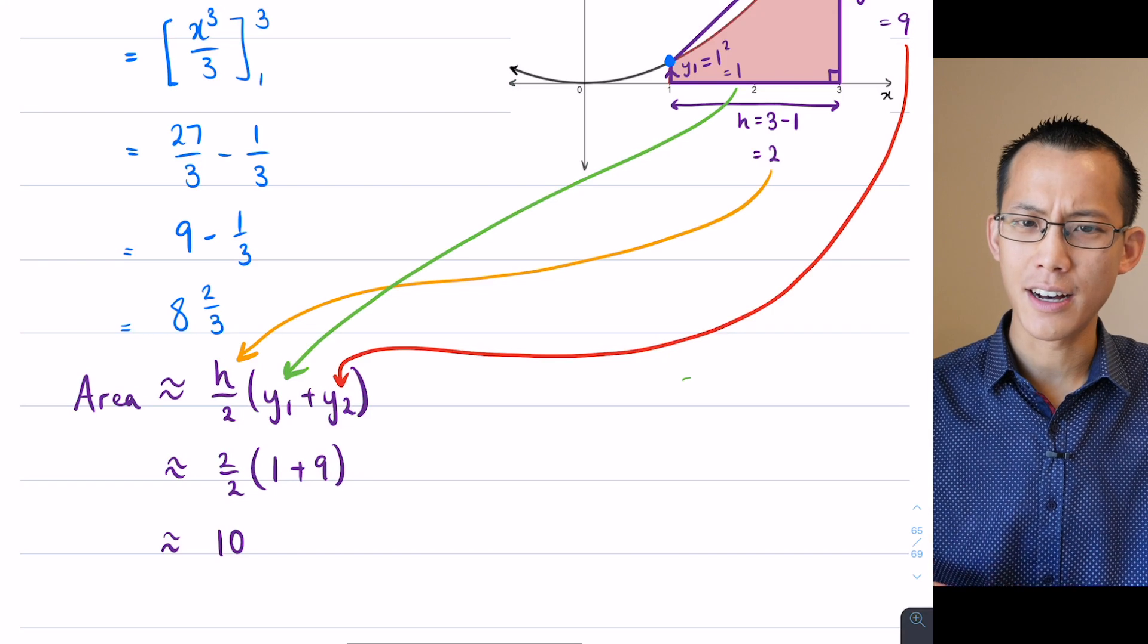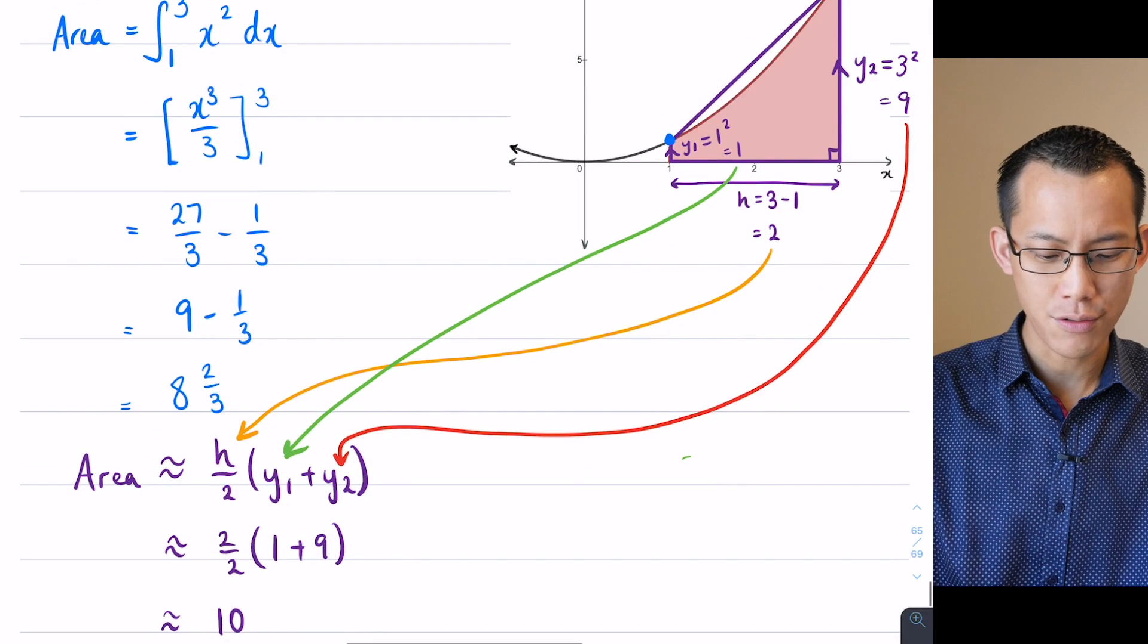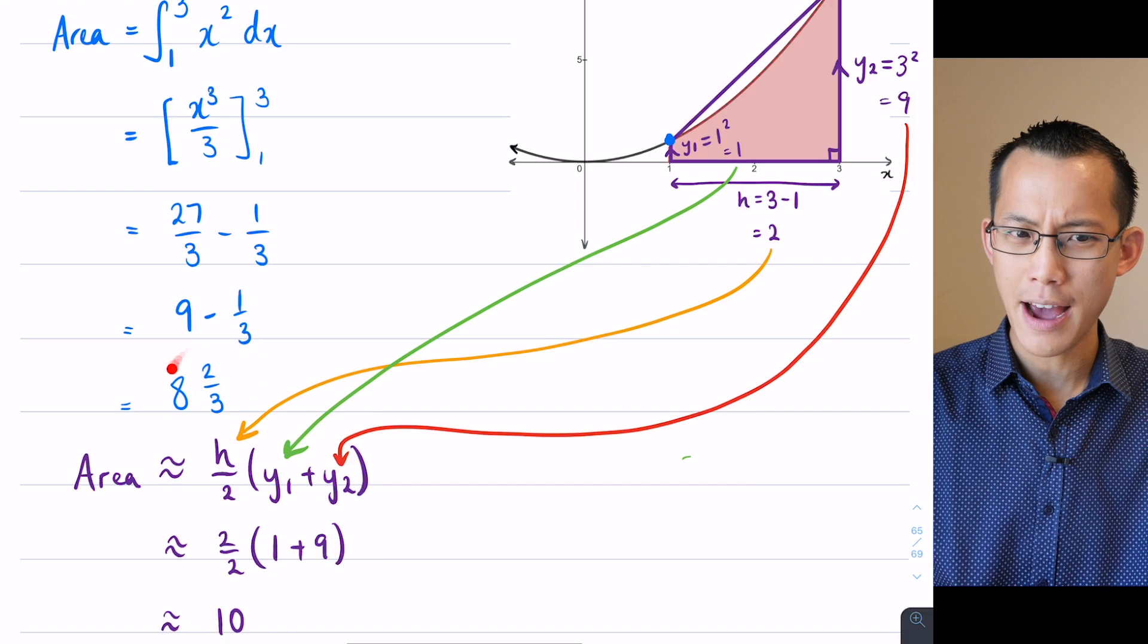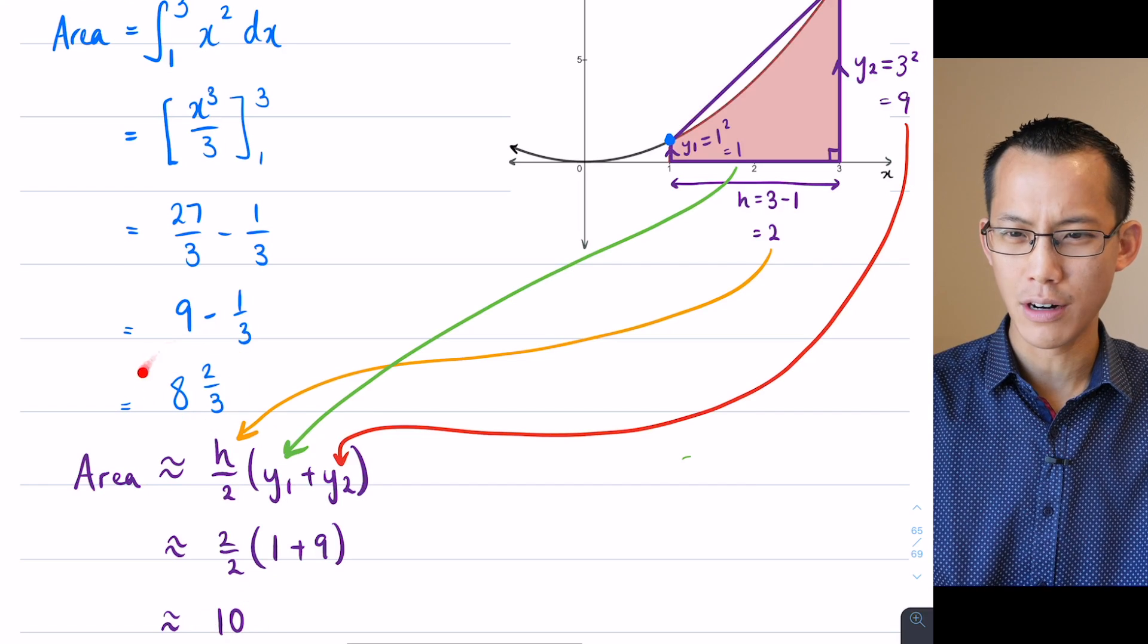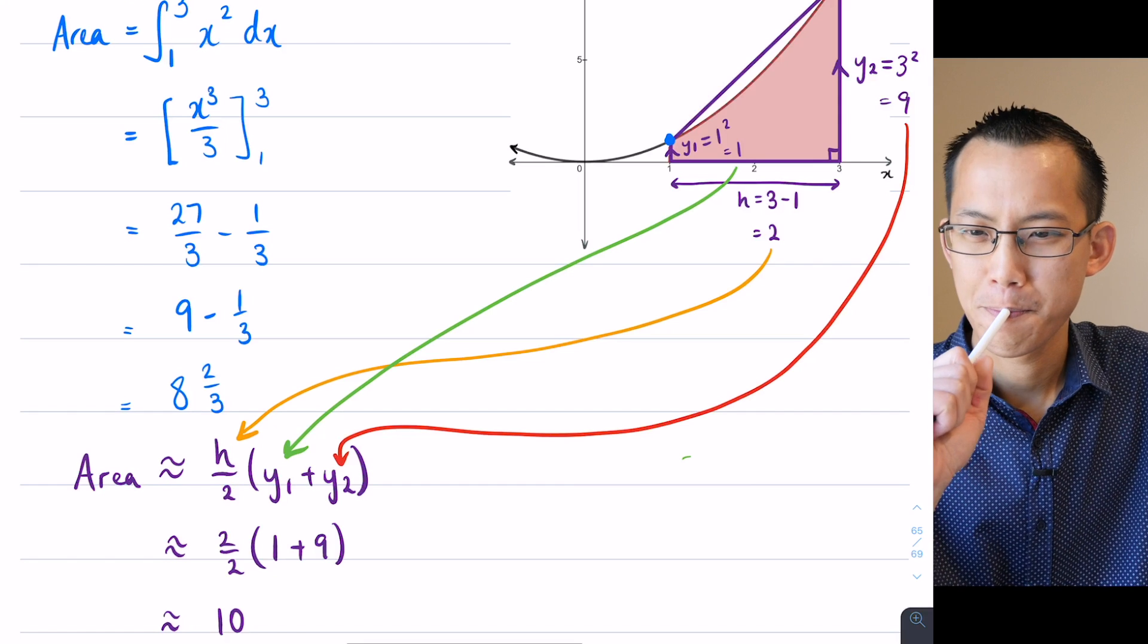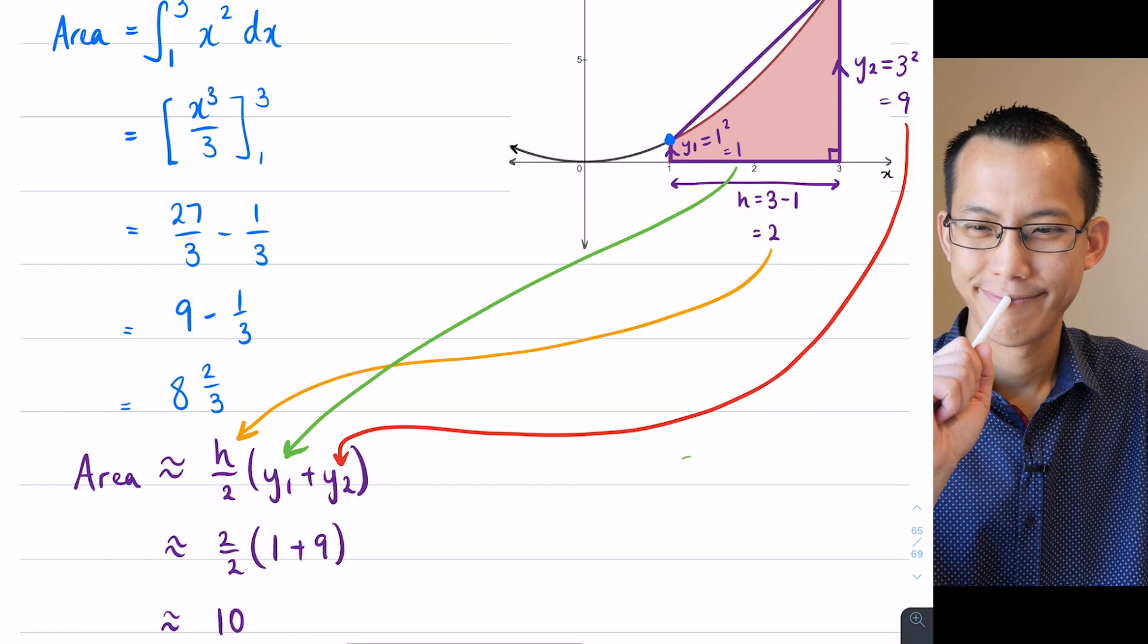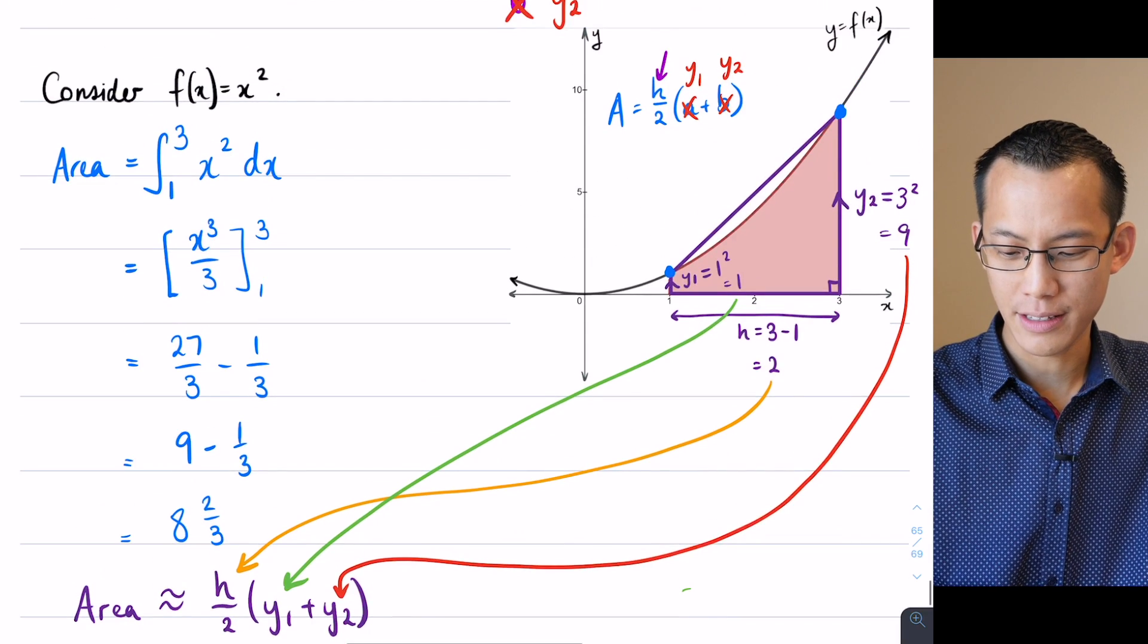Now the approximation is greater than what we found before, which was 8 and 2 thirds. Why is that? Can someone remind me? Why is our approximation larger than the actual answer? Can anyone tell me? Might help if you go back to this diagram here.